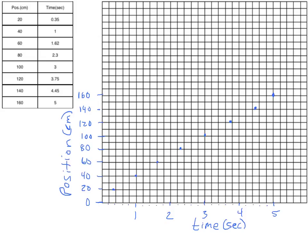Now that all our points are plotted, we need to draw what's called a best fit line. I'll lay a straight edge on my screen and draw it by hand so you can see how a best fit should look. As you can see, it's about as straight as I can get — I've hit as many points as possible, and those I can't hit are close to the line. This would be considered a very good best fit line.